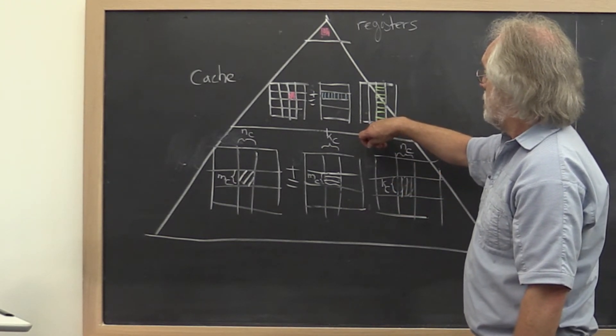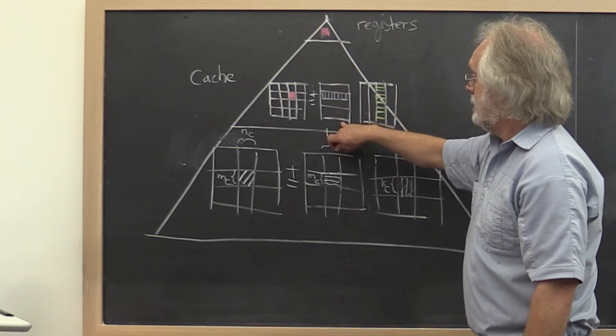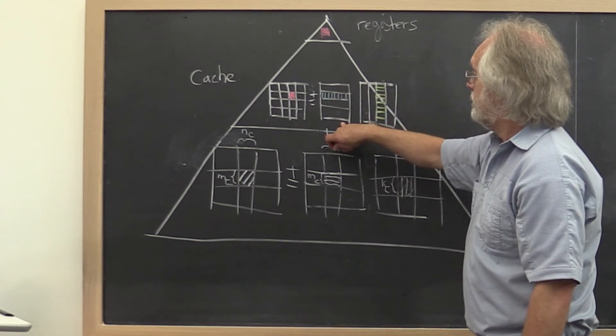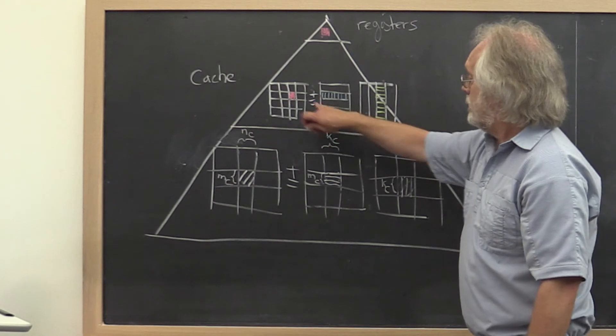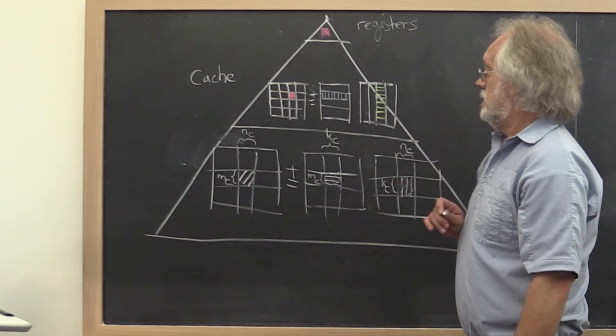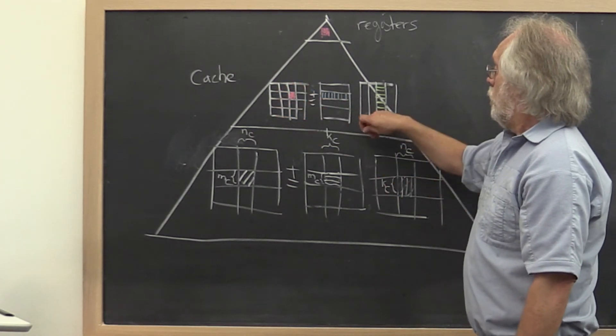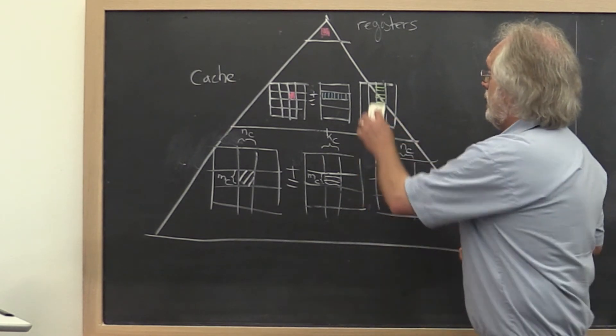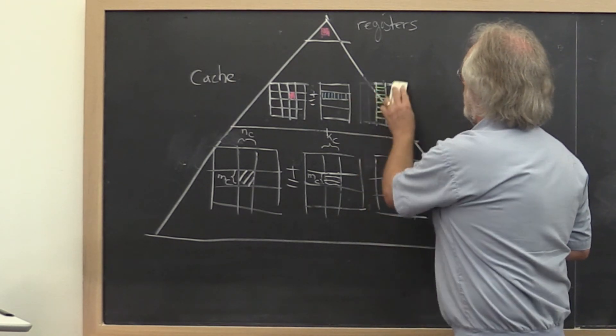And then we notice that we don't need to have the entire block of B resident in this cache layer because once we have multiplied it with all of these micro panels of A to update all of these micro tiles of C, we will not be reusing it. So really the picture should look more like this.